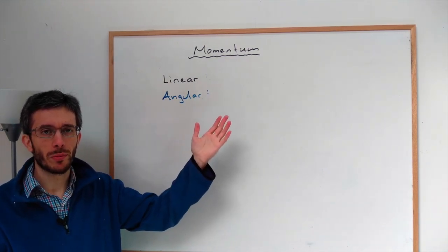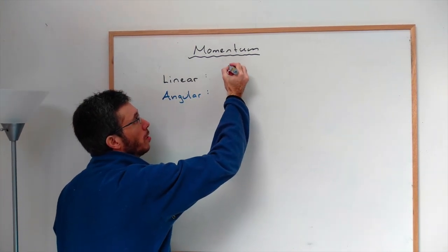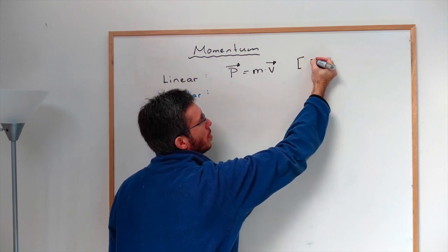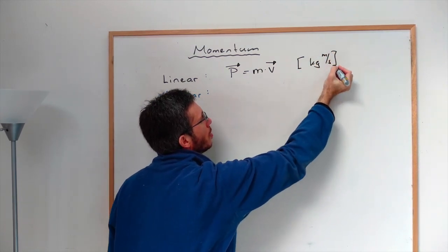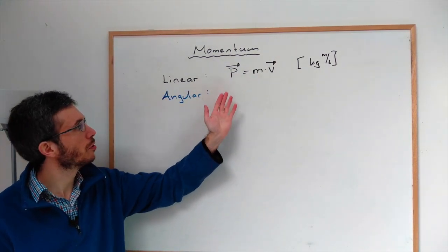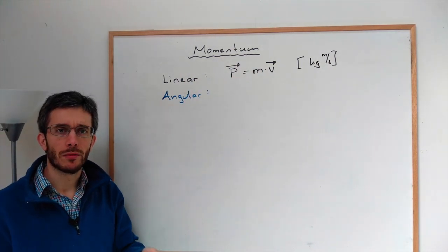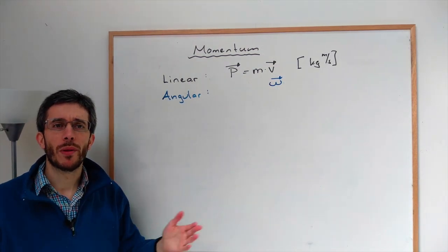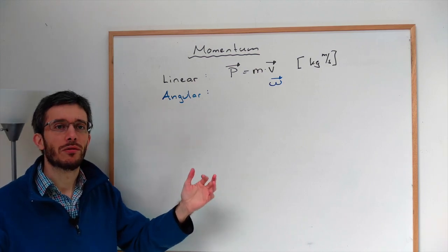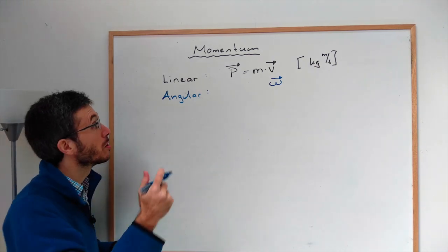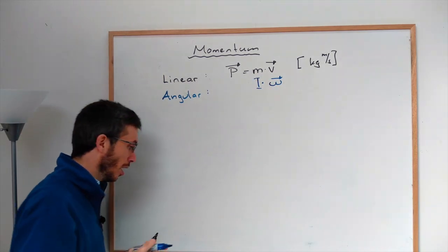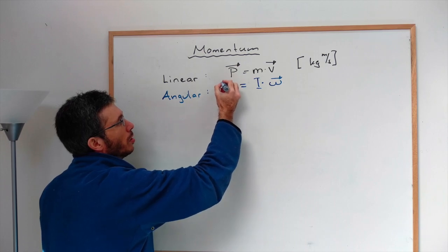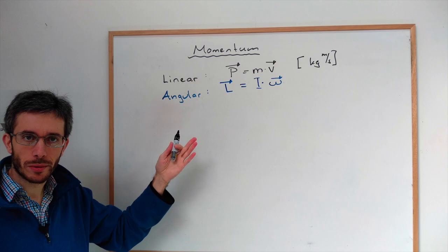So let's look at what angular momentum is, based on linear momentum. Linear momentum P is mass times velocity, with units of kilograms meters per second. Thinking back at the equivalences between rotational and linear entities: the equivalent for velocity is angular velocity ω, and the equivalent for mass — which is trickier — is inertia I. So angular momentum L equals I times ω.